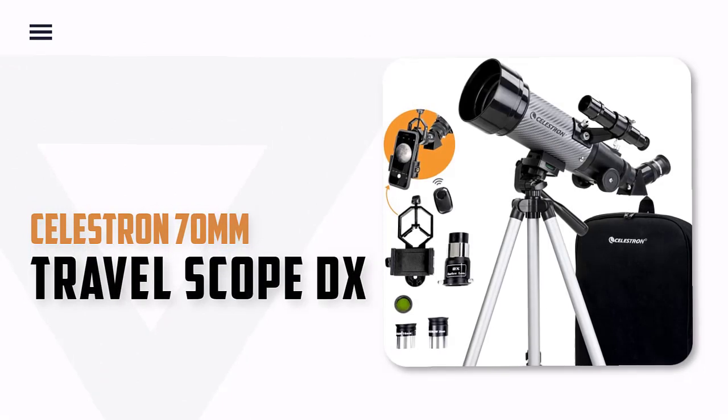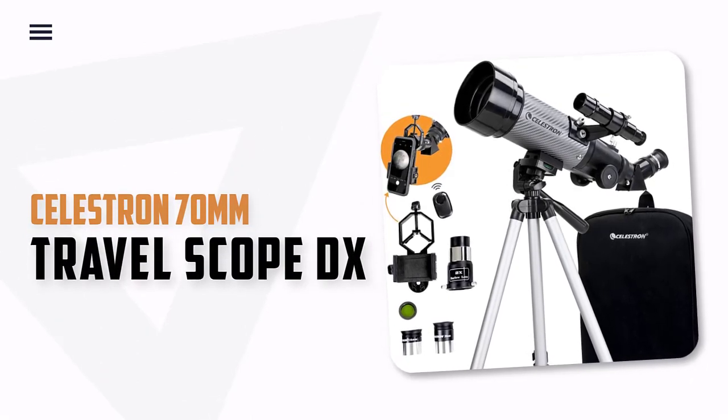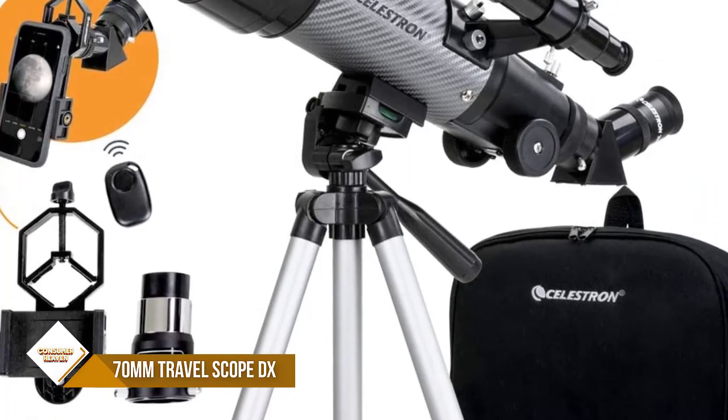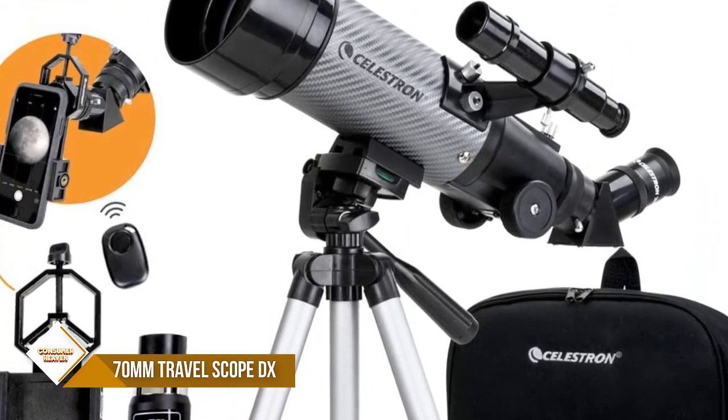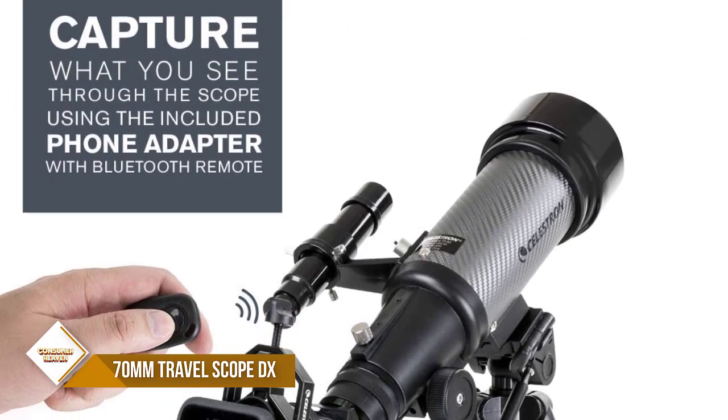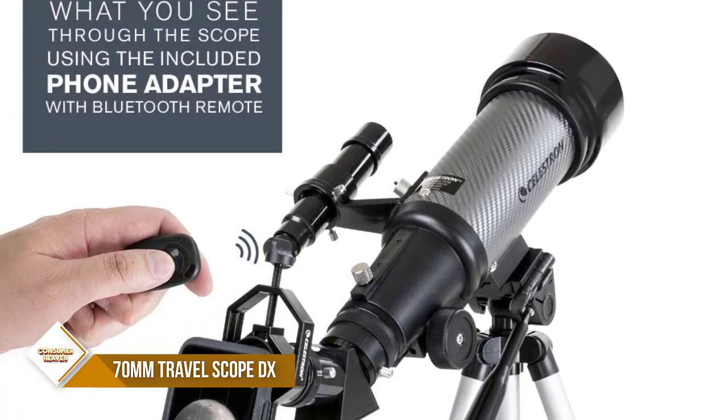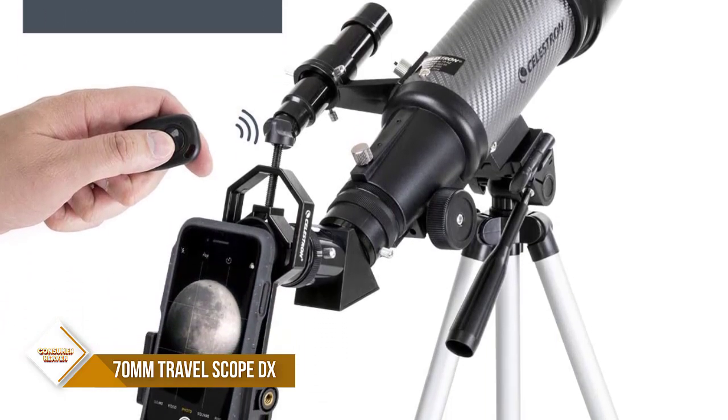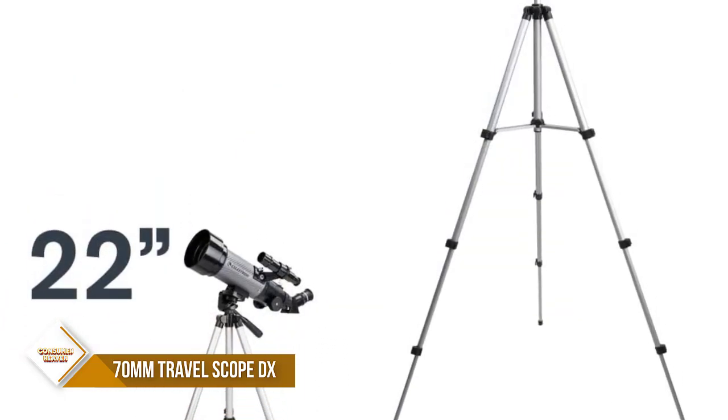Number 6. Celestron 70mm Travelscope DX. Enjoy dazzling views through this high-quality 70mm refractor with fully coated glass optics. The Travelscope features a manual altazimuth telescope with a pan handle to navigate the sky with ease. It's all anchored by a steel tripod, which you can adjust to the desired height.